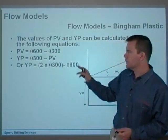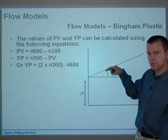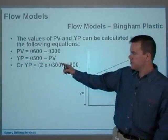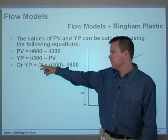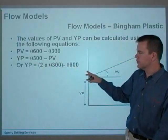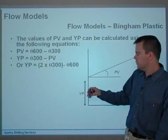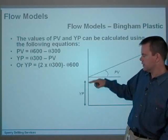So whatever the values were there gives you your PV. And PV, as I said before, is the slope of the line. And YP is theta 300 minus the PV value, or it could also be expressed as two times the 300 value minus the 600 value. Either way, you end up with the yield point. And the yield point, as I said, it's the thing that shifts the line up.